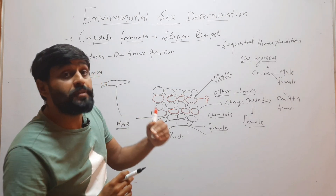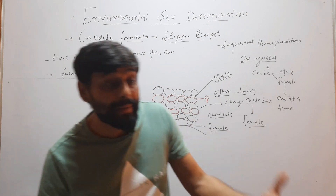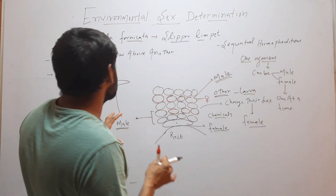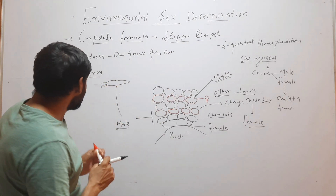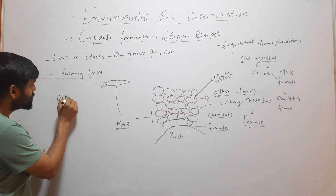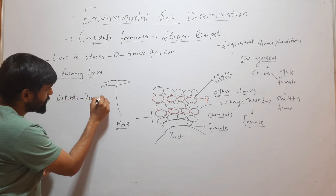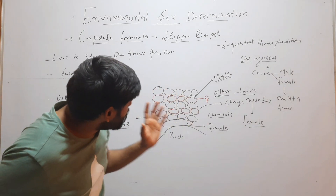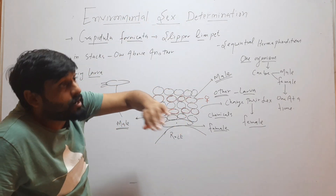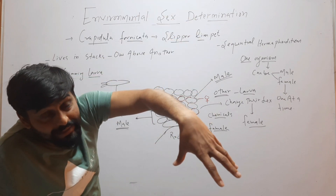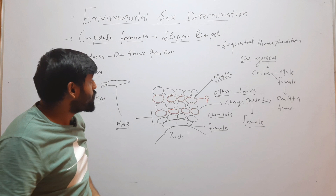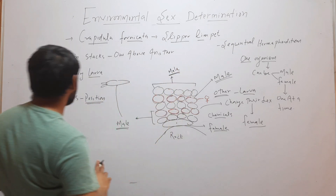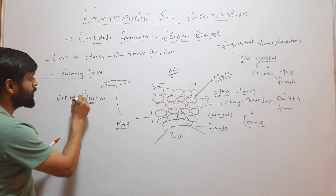You can see that these organisms are first male and then they become female — this is sequential hermaphroditism. So how does sex determination occur in Crepidula fornicata or slipper limpet? It depends on position. The first larva that attaches on the rock is female, and all others present above are male. The one on top will always be male, so sexual determination here depends upon position in the stack.